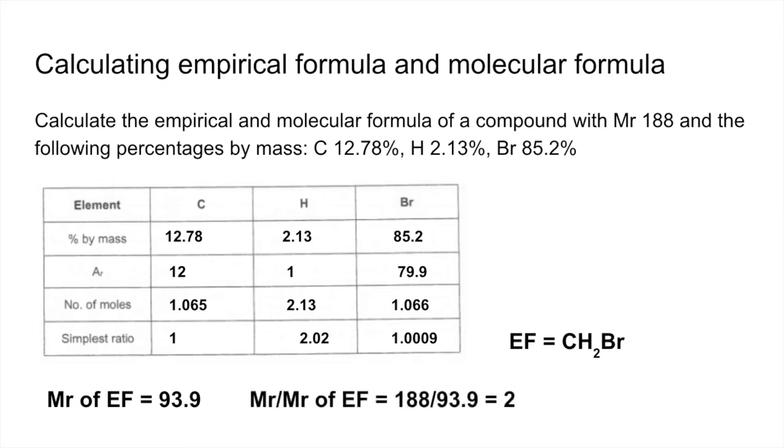So we'll take the MR of the molecule and divide that by the MR of the empirical formula. So we get 2. So that means that the molecule has got double the atoms that are in the empirical formula. So we just double the empirical formula and we get C2H4Br2.